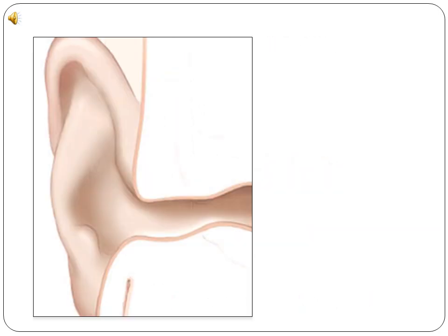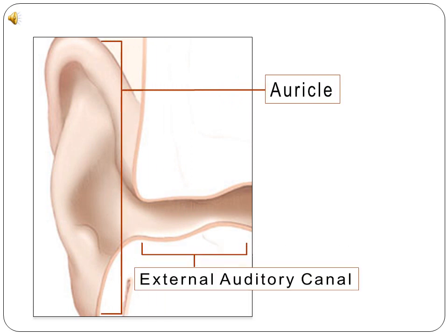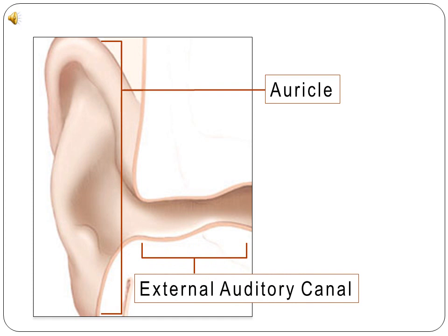The outer ear consists of the auricle, or pinna, which collects sound waves, and the external auditory canal, which allows them to pass to the middle ear.